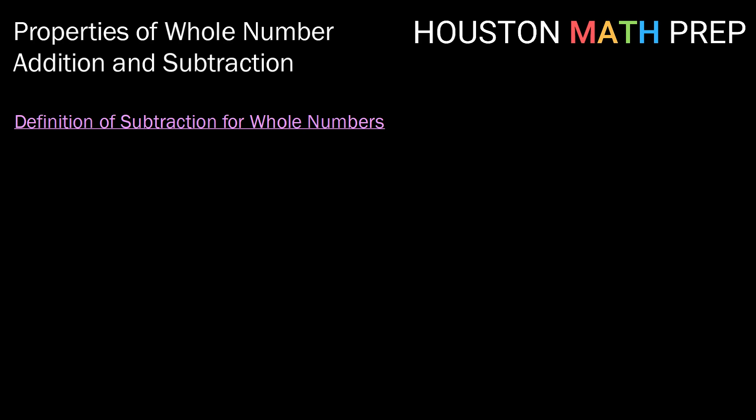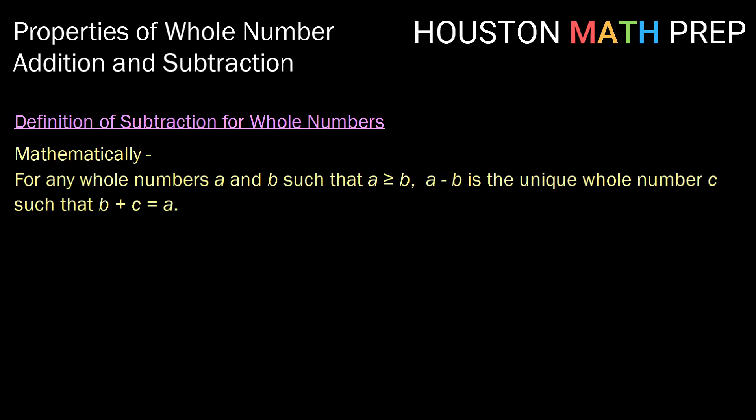So now that we've got all of our properties for addition, let's take a look at subtraction. So first, it's important that we define subtraction for whole numbers. So mathematically, our definition for subtraction of whole numbers says, for any whole numbers a and b, such that a is greater than or equal to b. That's an important part here. It is important that a is the larger of the two values, if they are not equal. Then, a minus b is the unique whole number c, such that b plus c equals a.